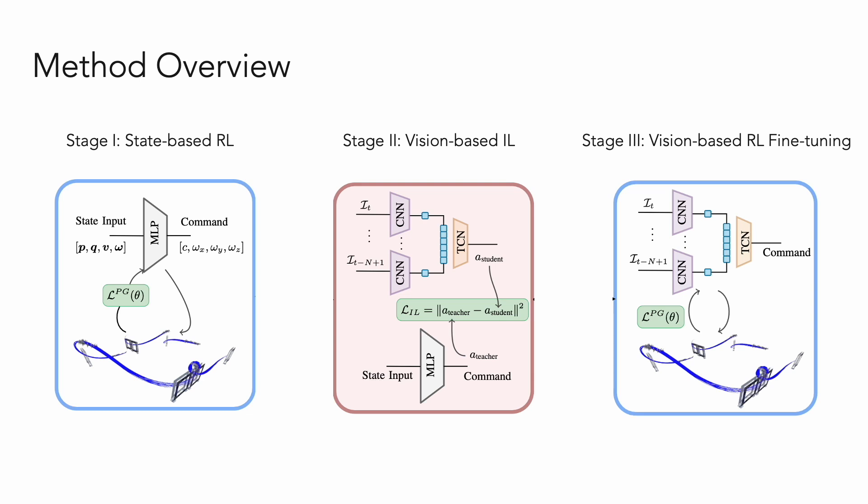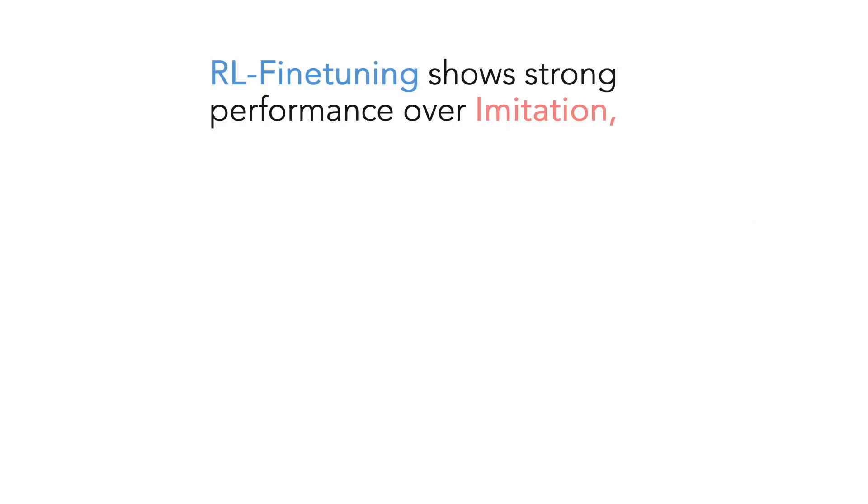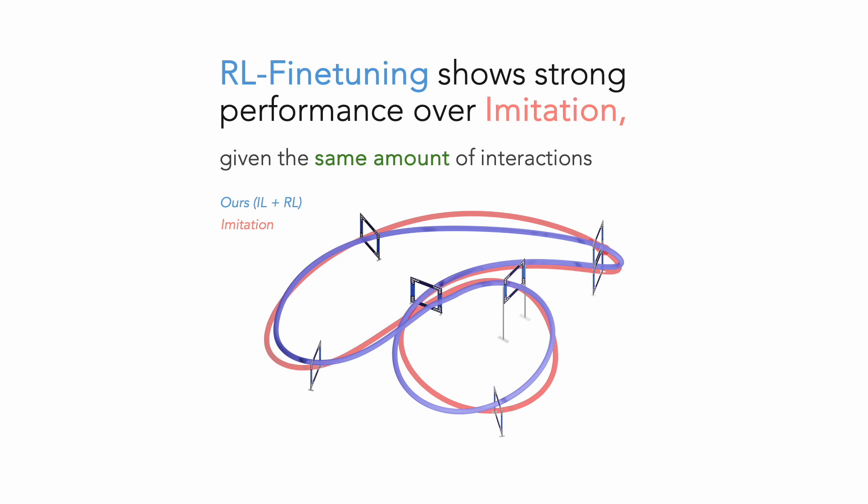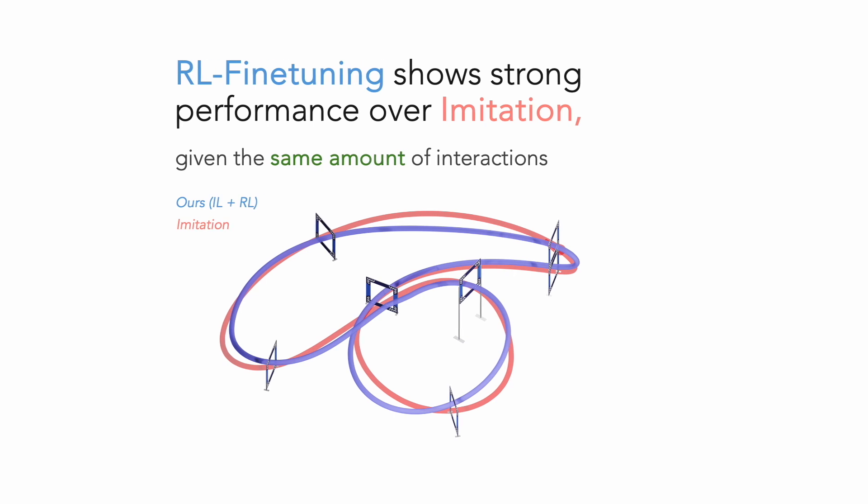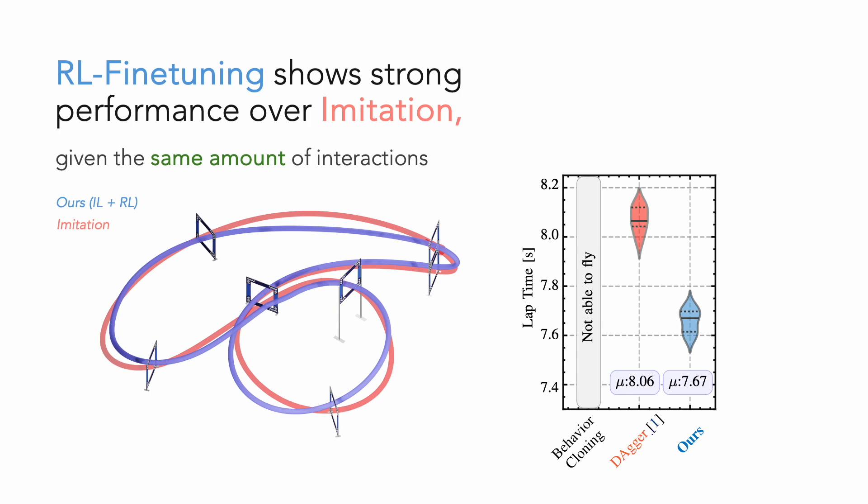Our goal is to combine the performance of reinforcement learning and sample efficiency of imitation learning. Our approach not only learns in scenarios where reinforcement learning from scratch fails, but also outperforms existing imitation learning methods in both robustness and performance.